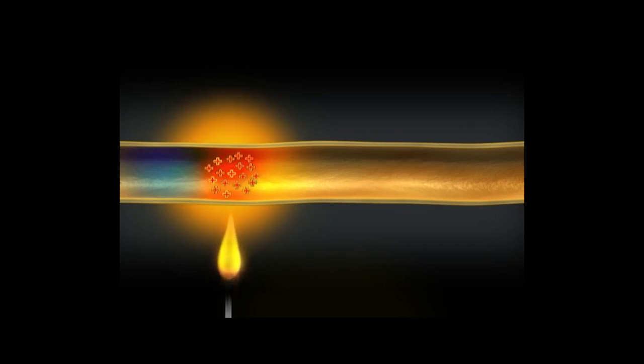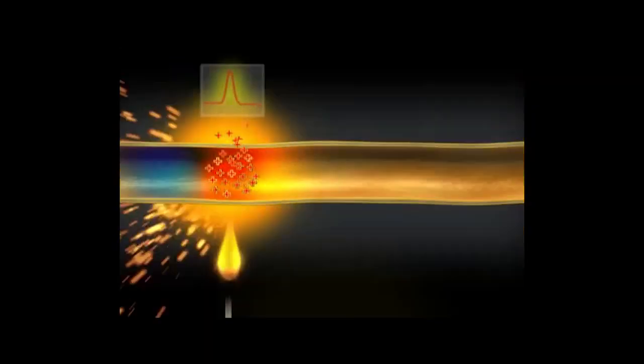Once the membrane reaches that threshold, voltage-gated sodium channels open up and sodium rushes in, as reflected in the upward deflection of the membrane potential. But how is the action potential propagated down the axon?